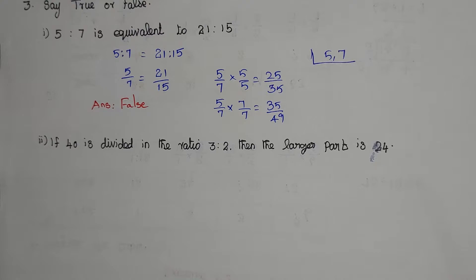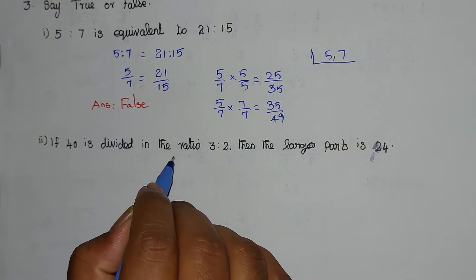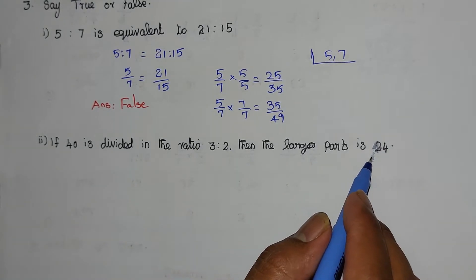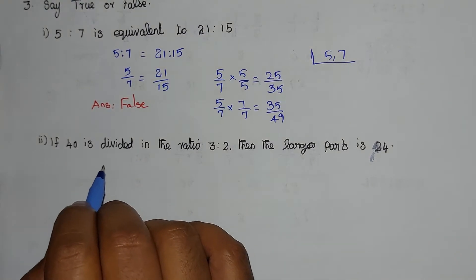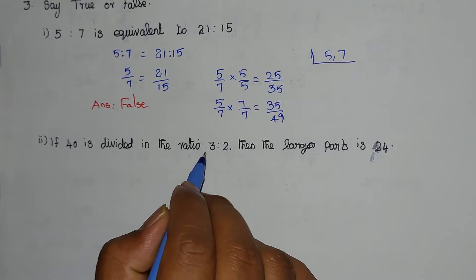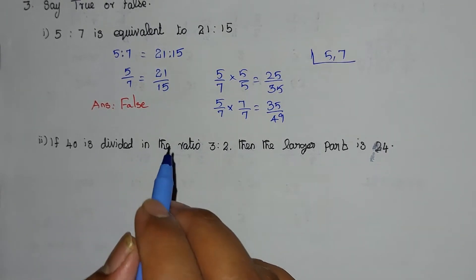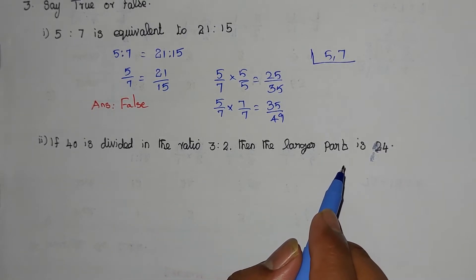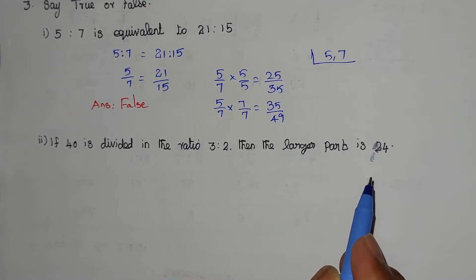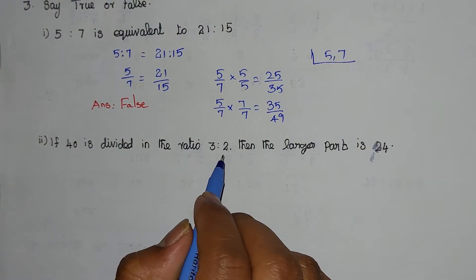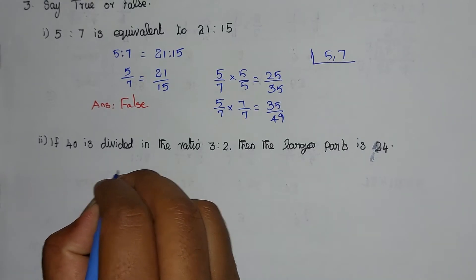Now we are going to solve subdivision problem 2. If 40 is divided in the ratio 3:2, then the larger part is 24. That is true or false. First, the larger part is in 3:2 ratio. How can we do this?